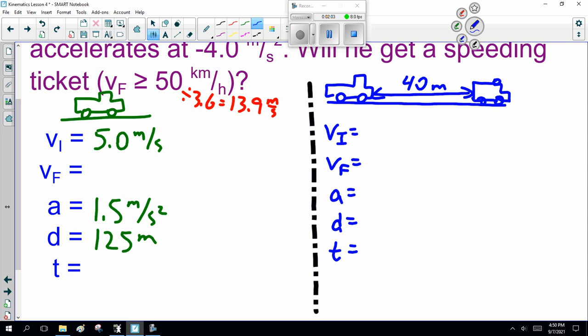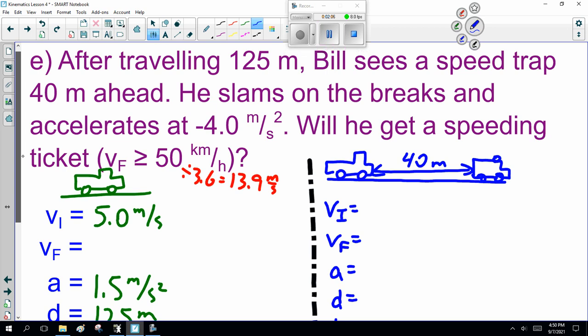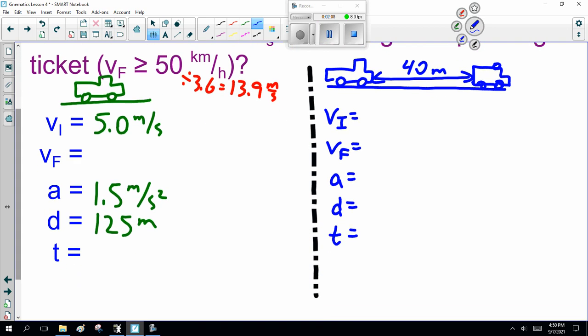Now, all we know in this part, here he accelerates at -4.0 m/s², and that's it. Oh, displacement is 40 meters. We want to know his final velocity here. To do that, we need either his time or his V_i. The key here, and what makes this sneaky, is that his V_F here becomes his V_i here. So, we've got two separate parts, two separate calculations we have to do.